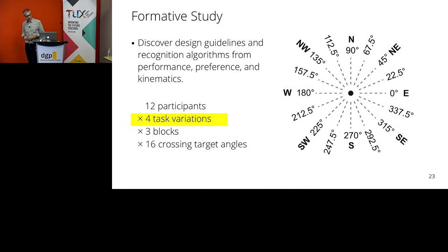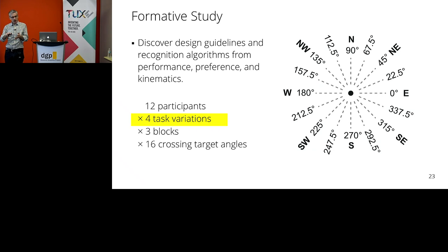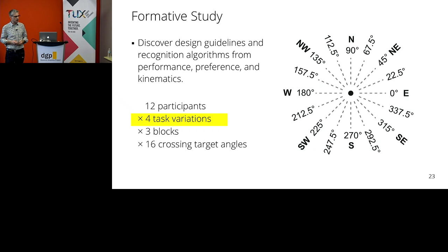We ran a study — I'm warning you, I'm going to show a graph in a moment, but no p-values. We wanted to understand: what is the range of motion in this kind of radial target crossing input space? We had participants do four task variations, and in each variation they selected targets in radial positions 360 degrees around a central target.